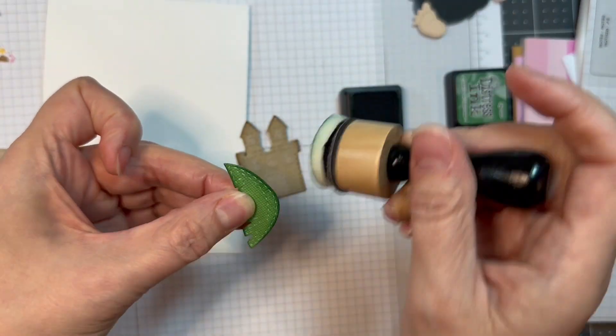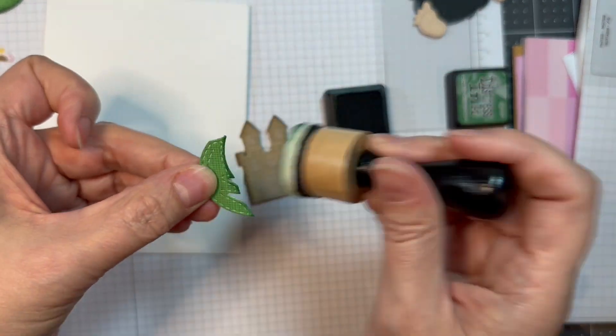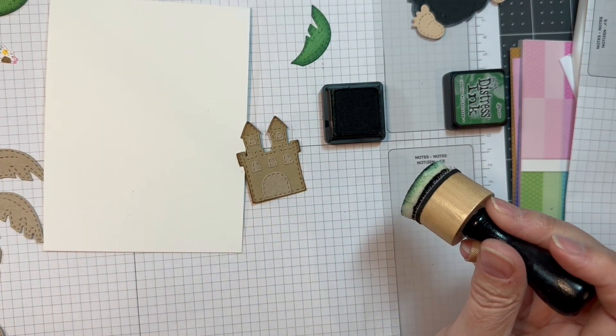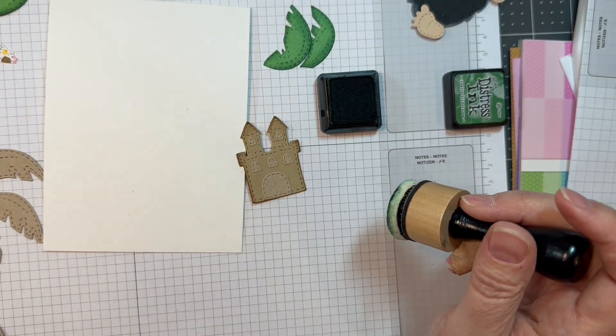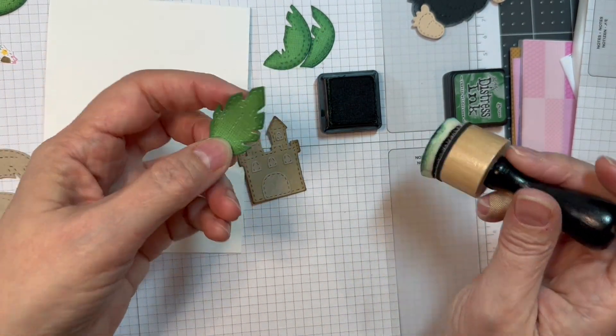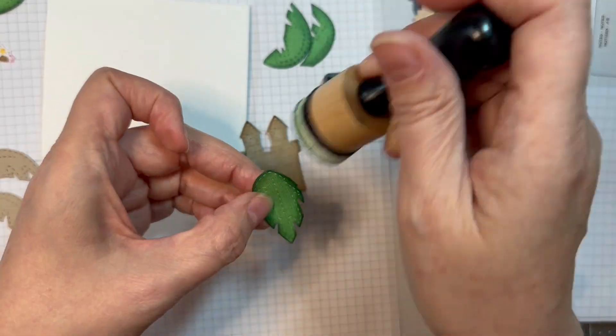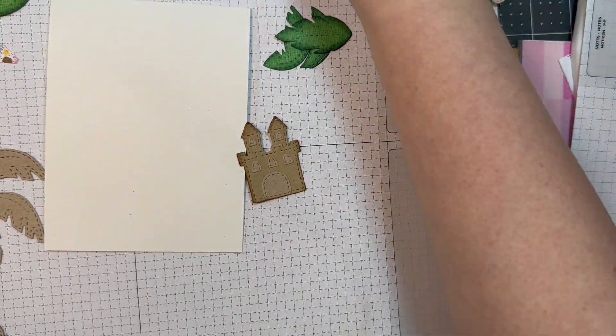I've got the leaves all cut out of Gingham Linen from Doodlebug on the linen side and I'm inking around the edges with Rustic Wilderness Distress Ink just to add a little bit of definition. I just find it makes a big difference.